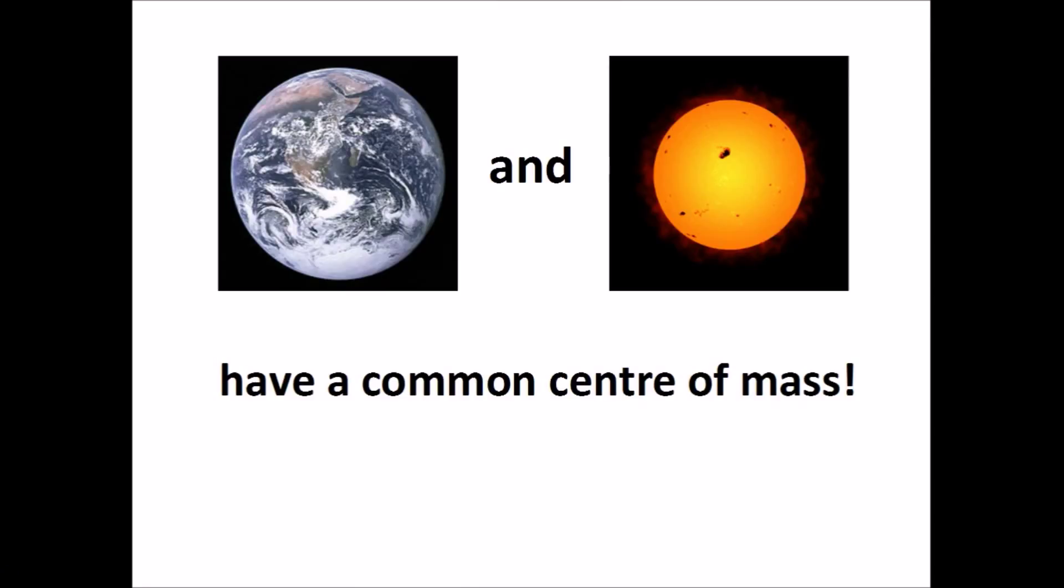It is said that our home planet orbits around the sun. Technically, that isn't true. The Earth and the sun have a common center of mass, and they both orbit around it. This raises an obvious question. Where is that center of mass?